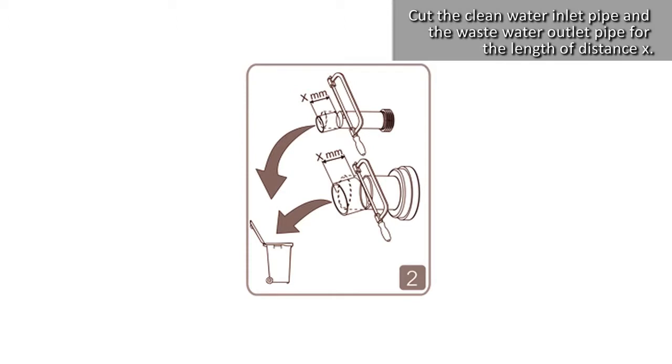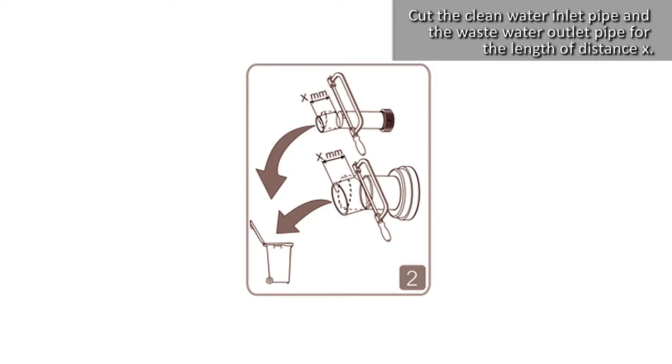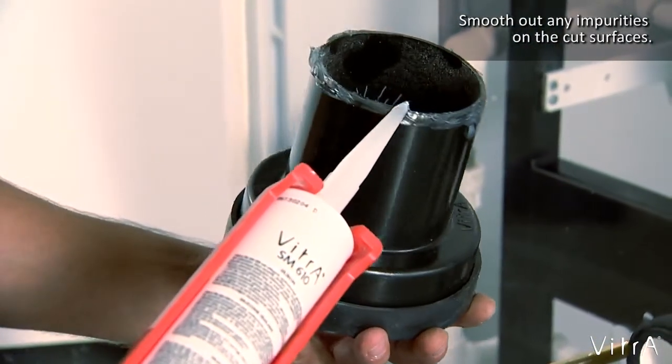Cut the clean water inlet pipe and the waste water outlet pipe for the length of distance X. Smooth out any impurities on the cut surfaces.